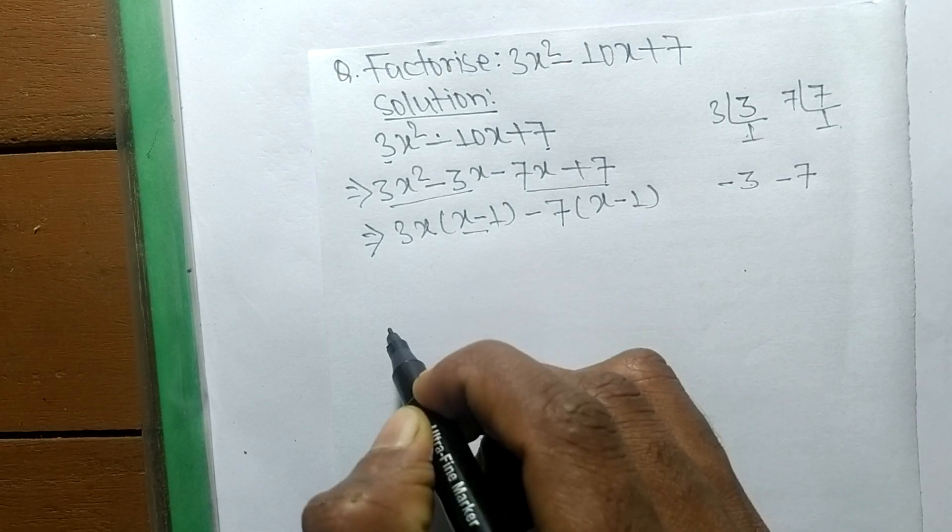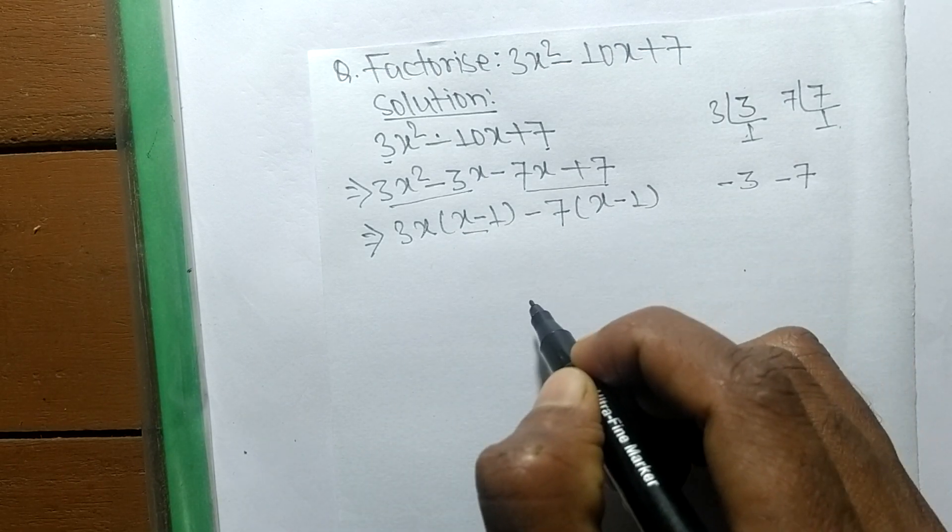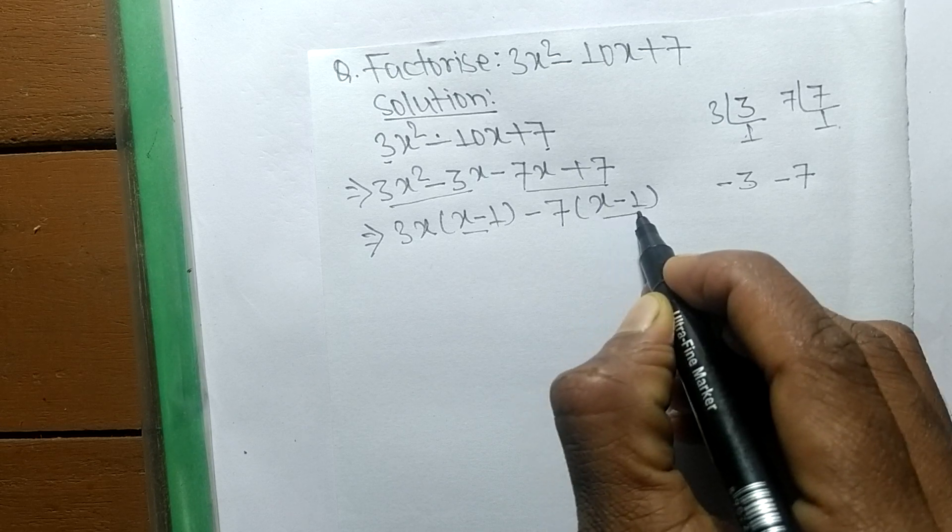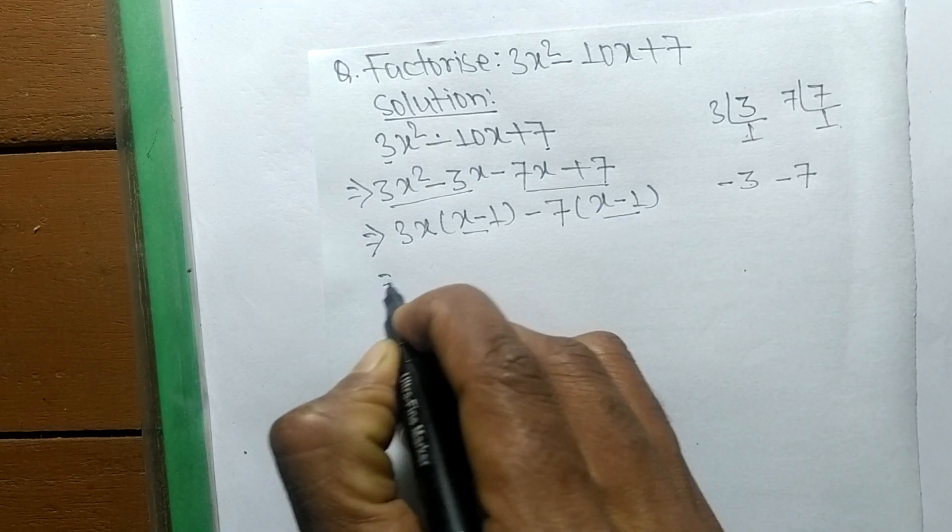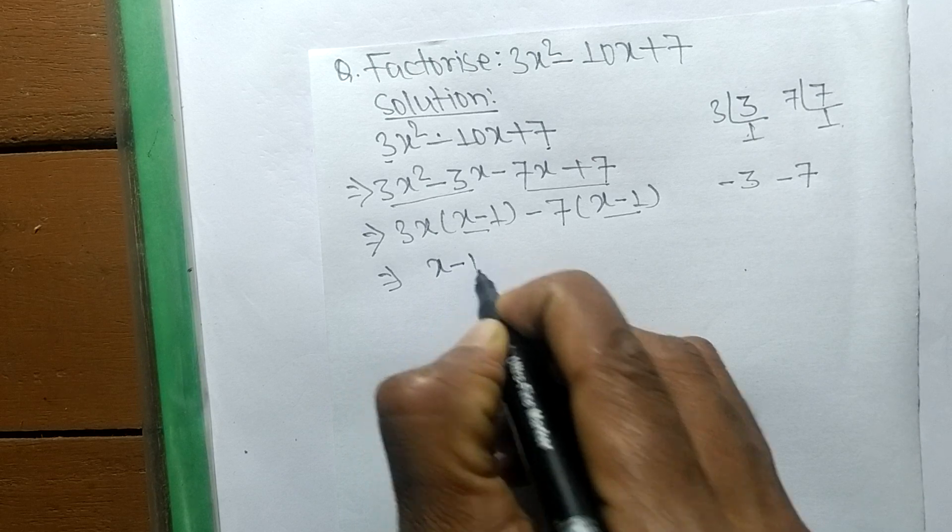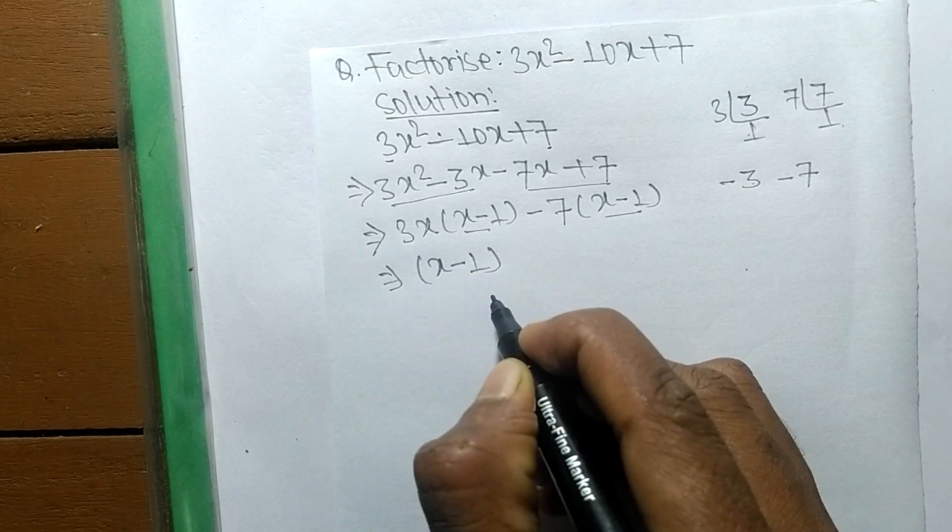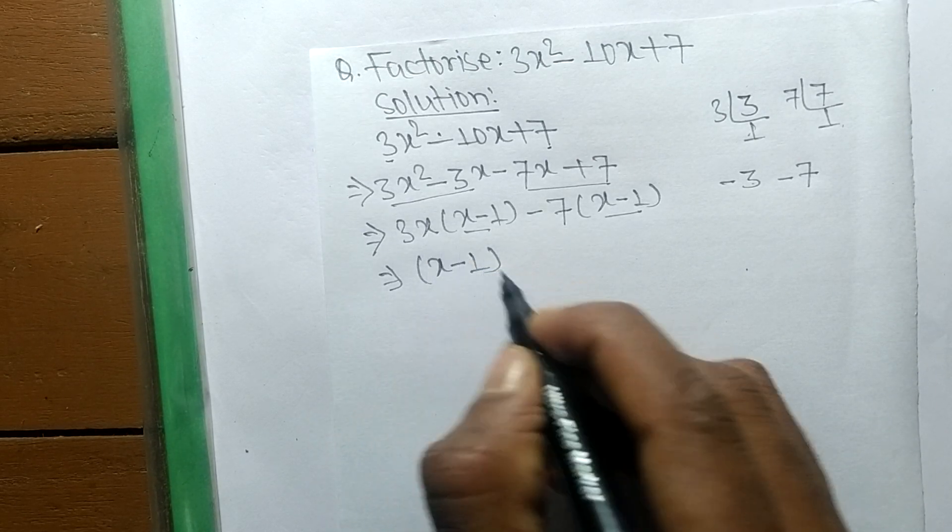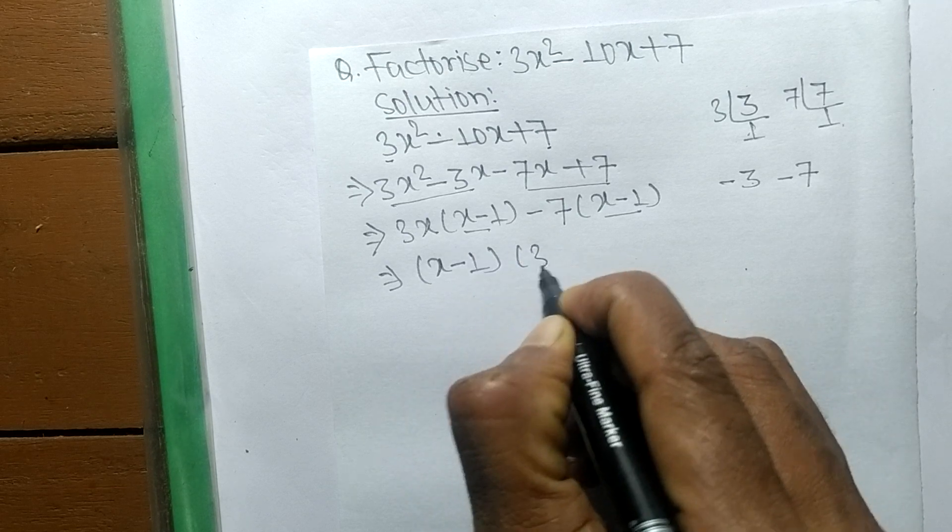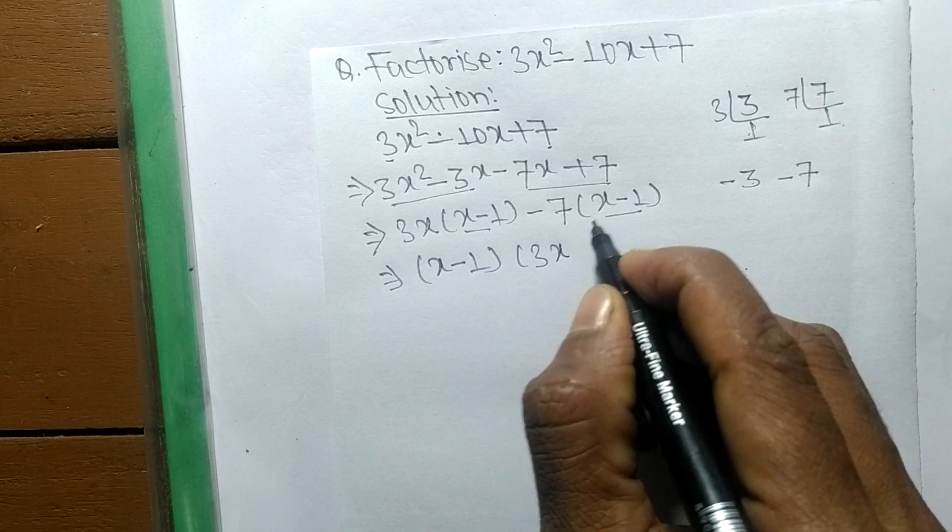In the first part there is (x - 1), and in the second part also there is (x - 1). So we can write (x - 1) as common. The remaining part in the first expression is 3x, and the remaining